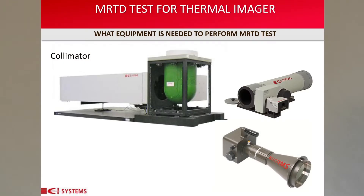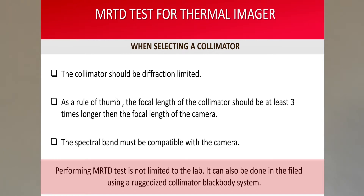Let me explain what a collimator is. A collimator is an optical device that simulates images placed on the focal plane to the distance of infinity. Another way of explaining is that a collimator is an optical system that projects images focused at infinity. When selecting a collimator: first, the collimator should be diffraction limited, not to degrade the quality. Second, as a rule of thumb, the focal length of the collimator should be at least three times longer than the focal length of the camera. Third, the spectral band must be compatible with the camera.